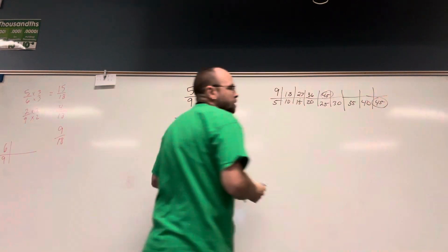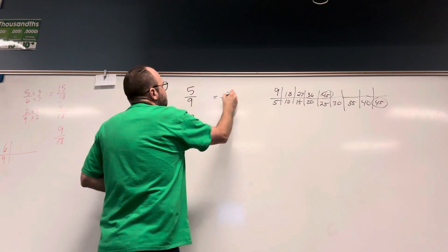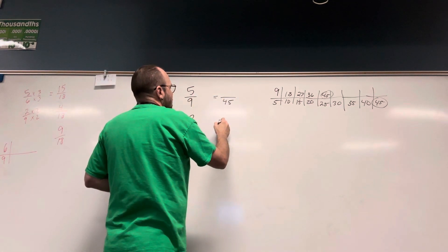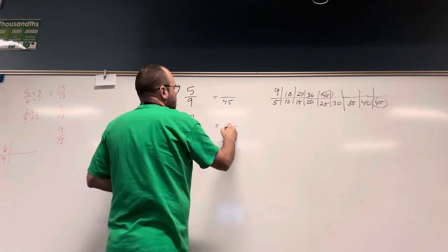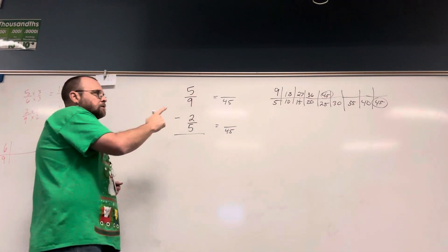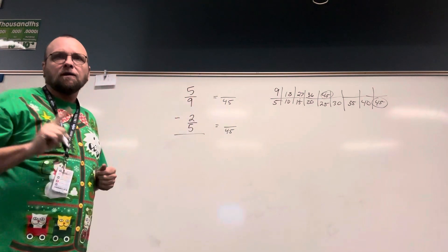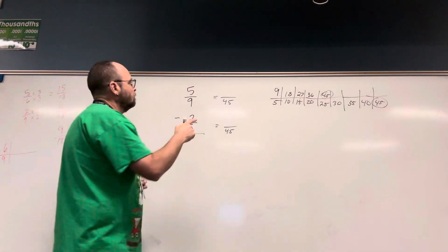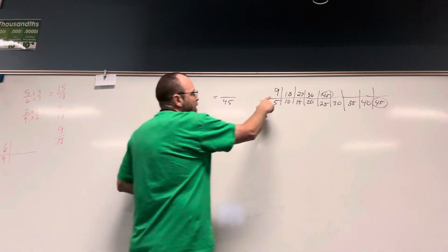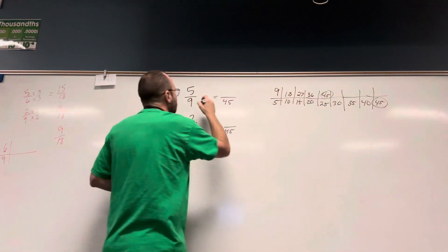Since my common denominator is 45, I need to change both of these fractions so that they have a denominator of 45, but I can't change the value. So I need to multiply both the numerator and denominator by the same thing. 9 times 5 is 45.